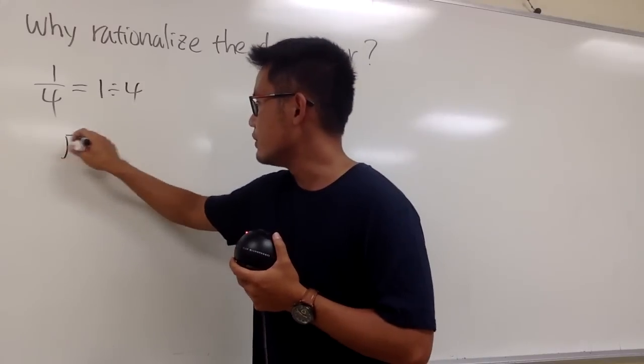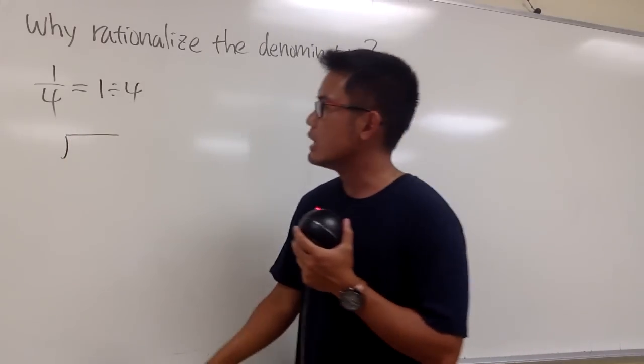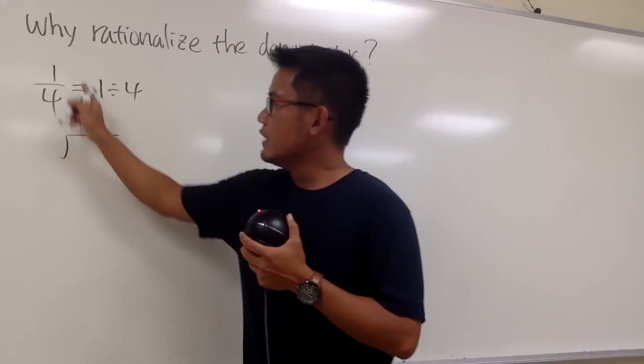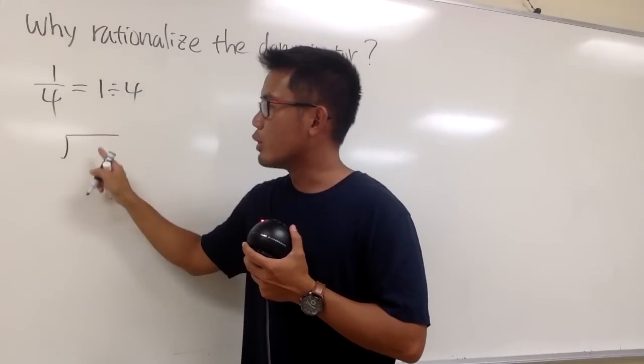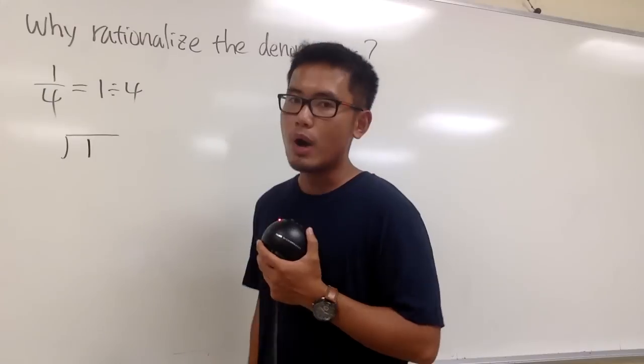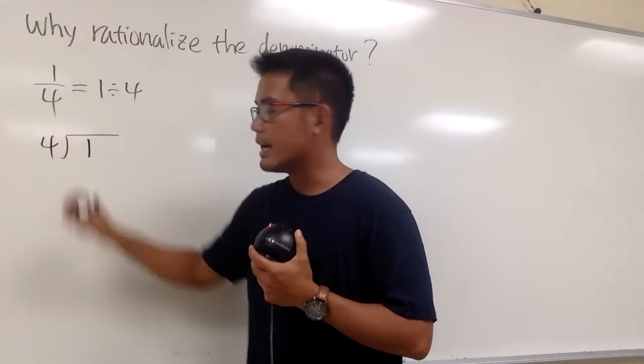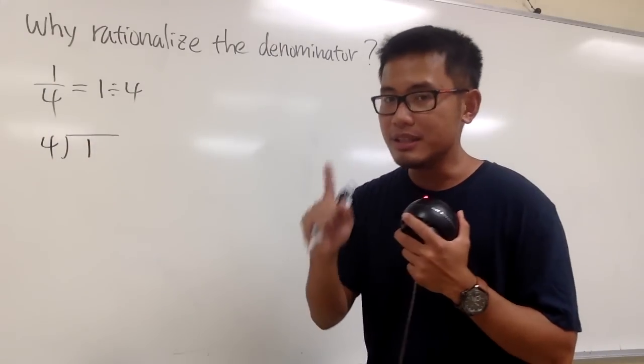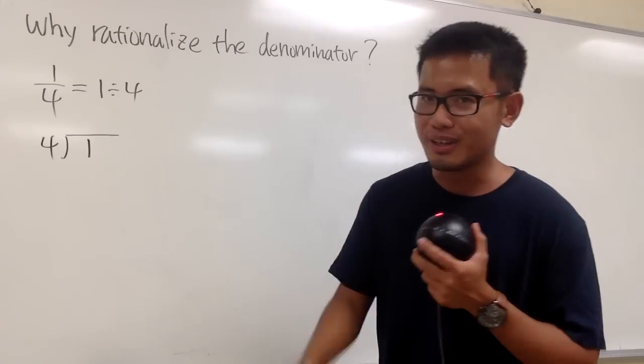Let's go ahead and draw the long division. What number goes inside? If you look at the fraction, the number on top goes inside. If you look at the division equation, the first number goes inside. So we'll put 1, and the 4 will be on the outside. The key is that we do not have a calculator.